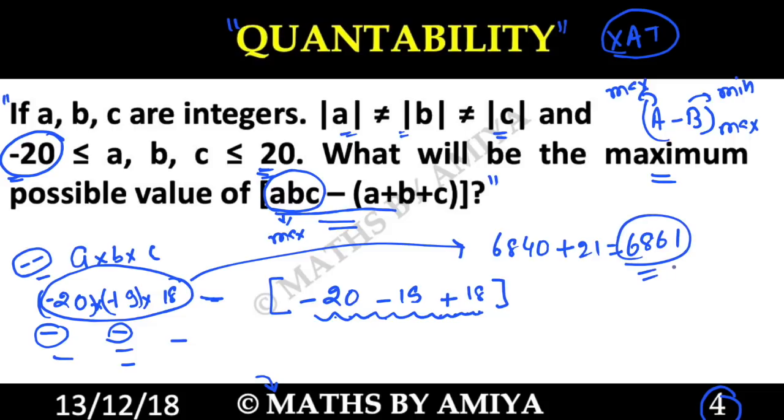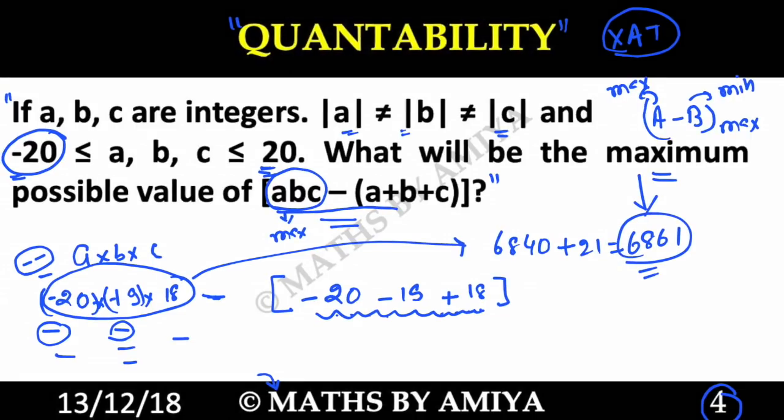So the answer of this question is 6,861 for the maximum value for these two values. I hope this is clear. We want just abc maximum and a plus b plus c minimum in the range of minus 20 to plus 20.